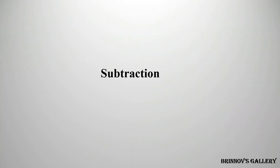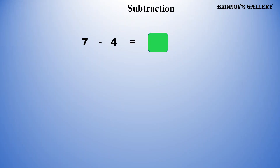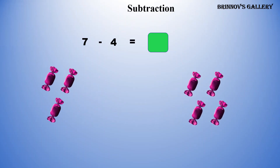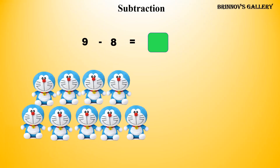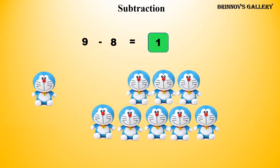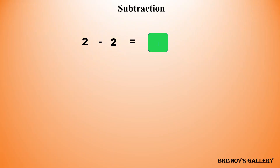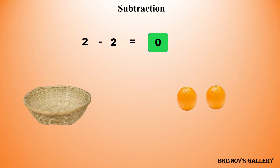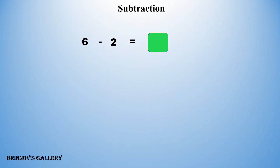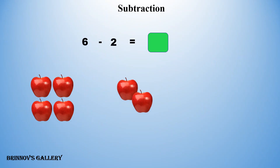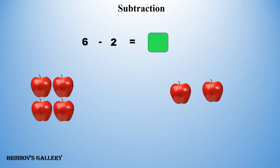Subtraction. 7 minus 4 is equal to 1, 2, 3 — 3. 9 minus 8 is equal to 1. 2 minus 2 is equal to 0. 6 minus 2 is equal to 1, 2, 3, 4 — 4.